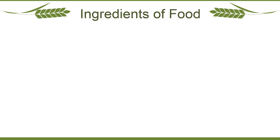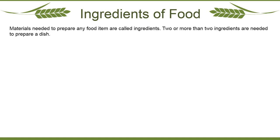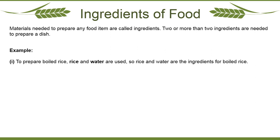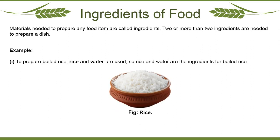Next, what are the ingredients of food? The materials needed to prepare any food item are called ingredients. Two or more ingredients are needed to prepare a dish. For example, to prepare boiled rice, rice and water are used. So rice and water are the ingredients for boiled rice.